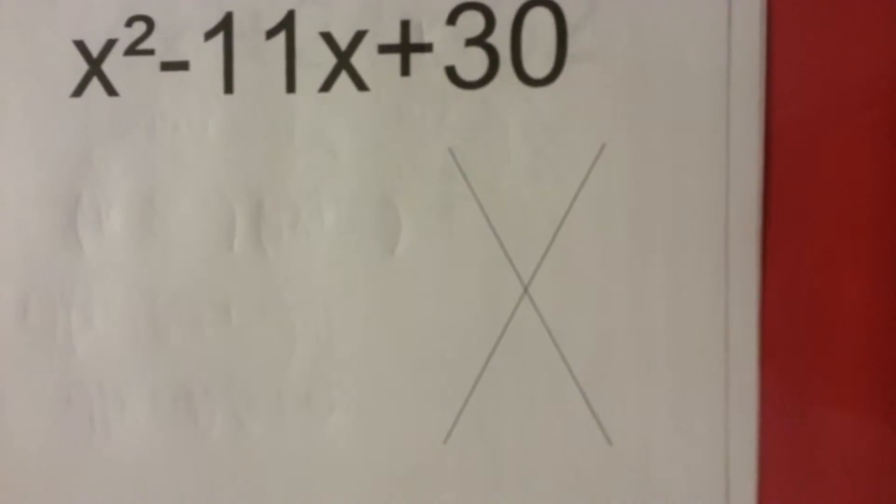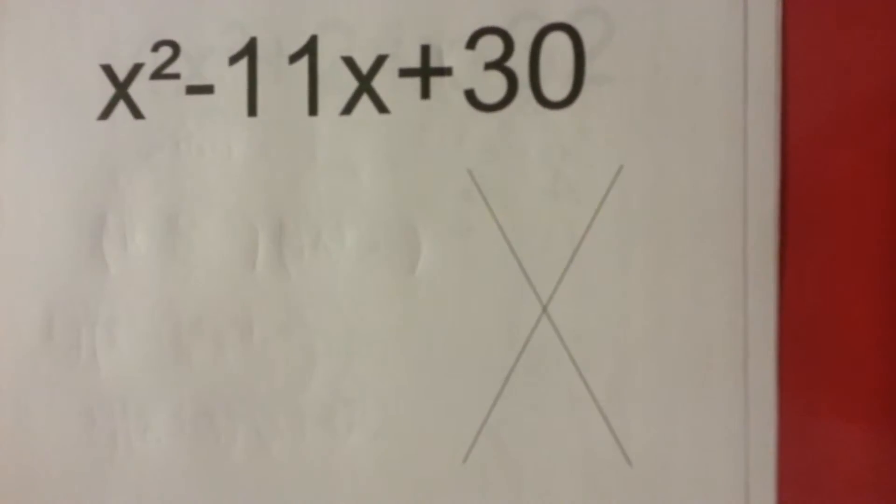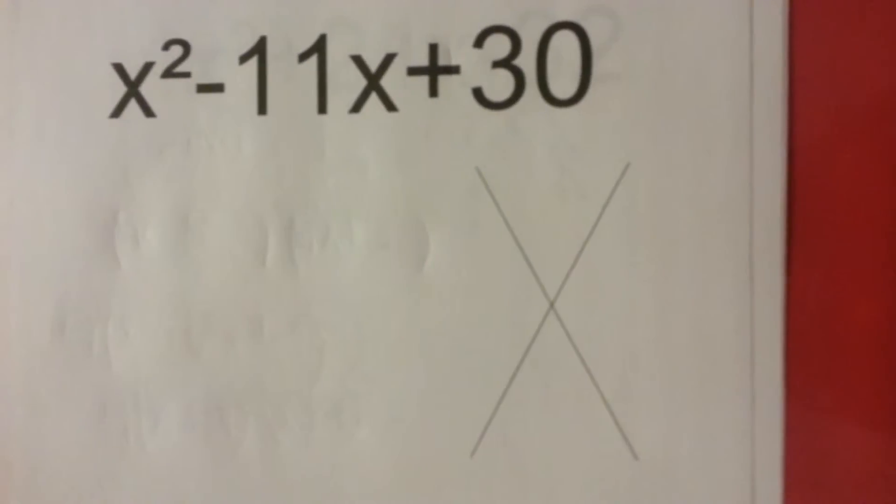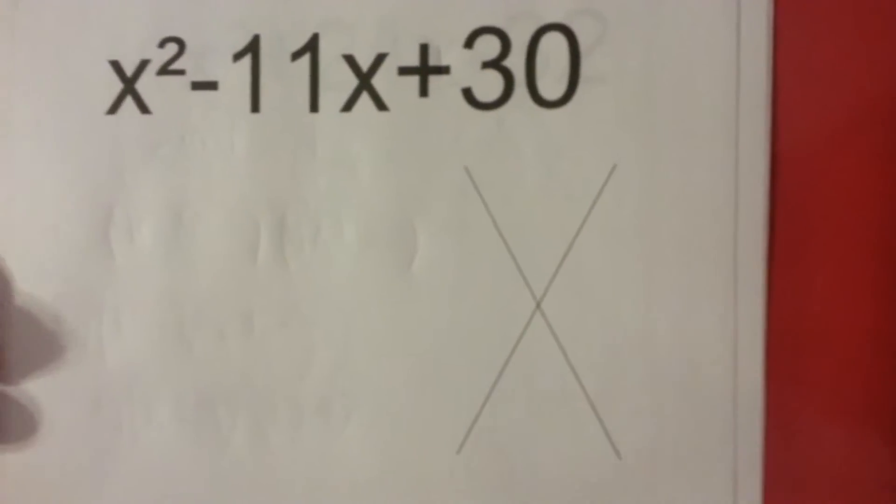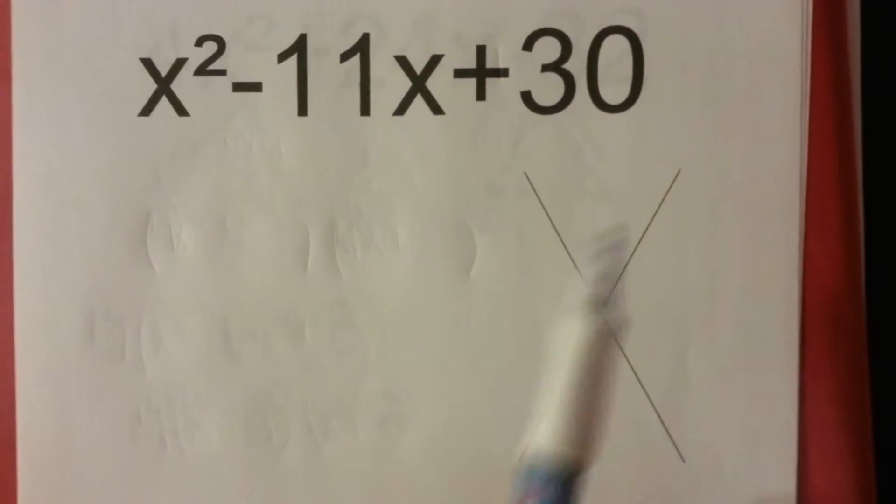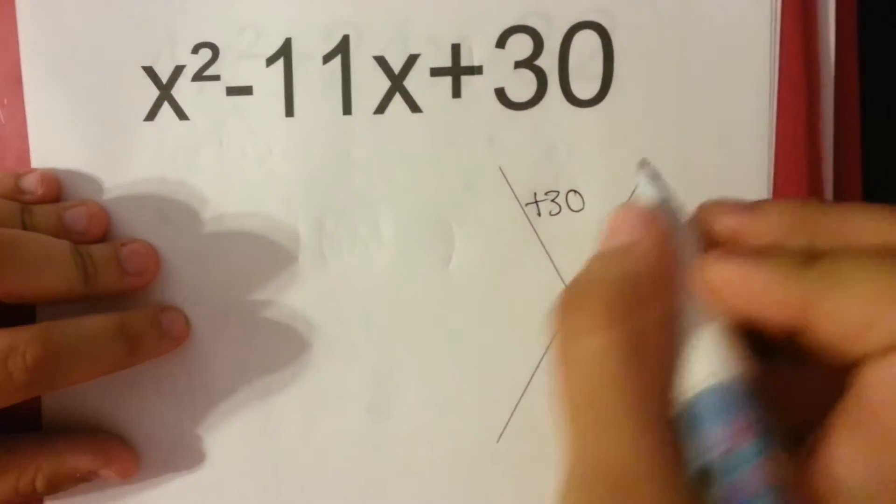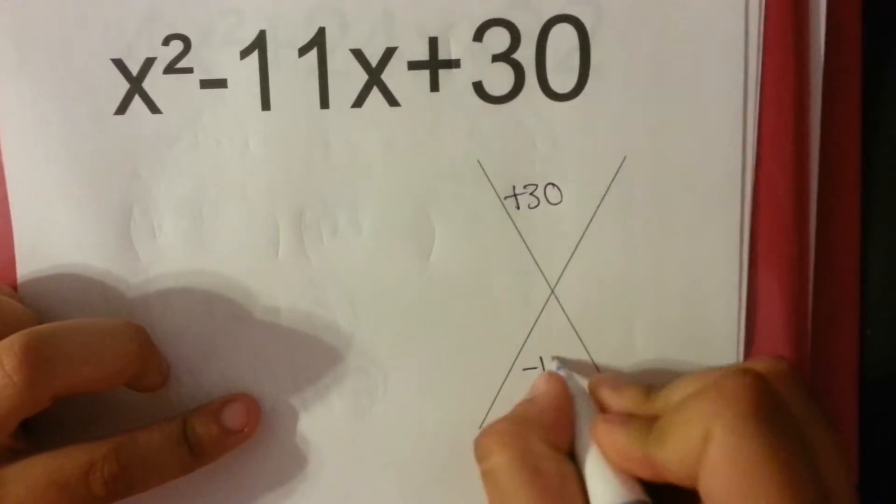Okay, now we're going to figure out how to factor an easy case quadratic trinomial expression using the diamond method. So you need to be able to multiply something together to get positive 30, but be able to add those factors together to get negative 11.